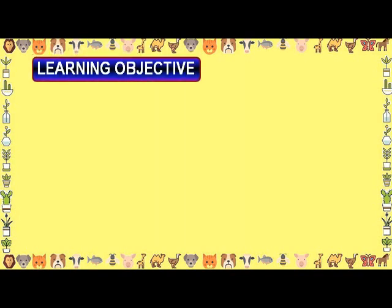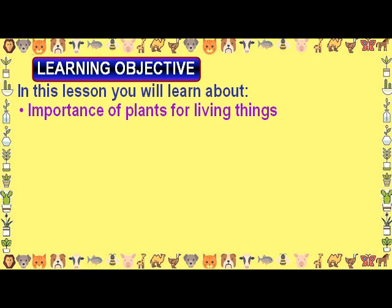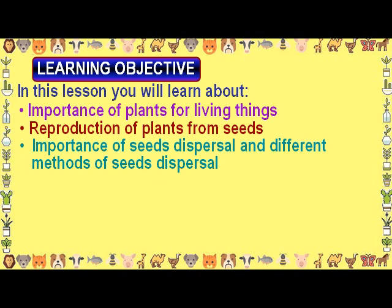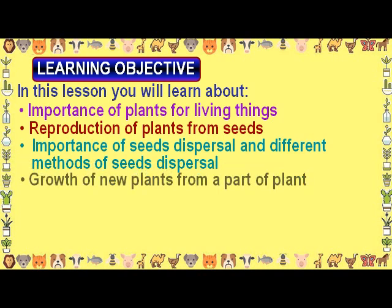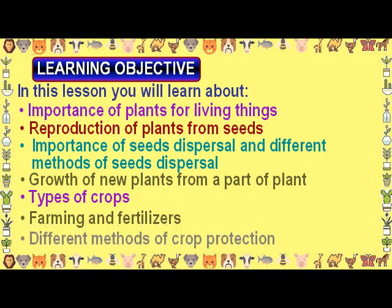Learning Objective. In this lesson you will learn about: the importance of plants for living things, reproduction of plants from seeds, importance of seed dispersal and different methods of seed dispersal, growth of new plants from a part of a plant, types of crops, farming and fertilizers, and different methods of crop protection.